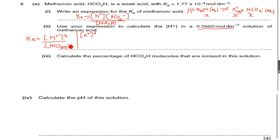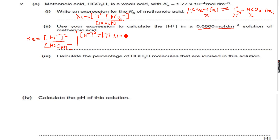We make [H⁺]² the subject and multiply Ka by [HCO₂H]. So that's 1.77×10⁻⁴ times the concentration of methanoic acid, which is 0.05. So the concentration of H⁺ squared will be equal to that value.